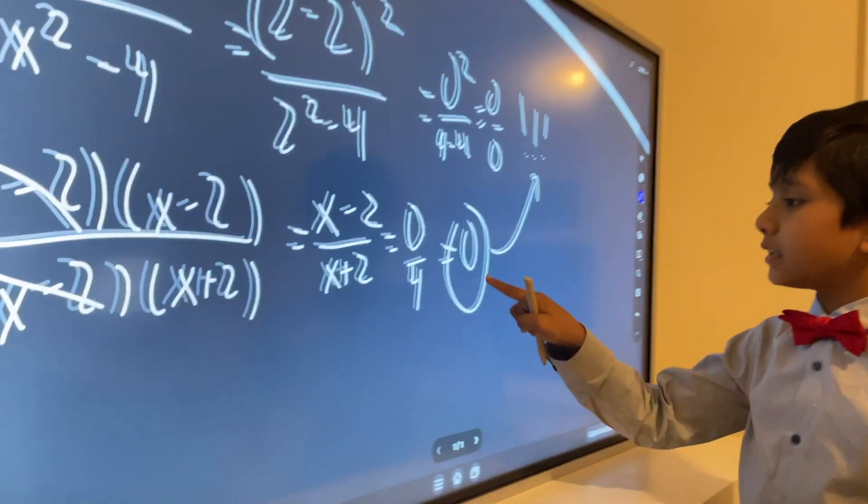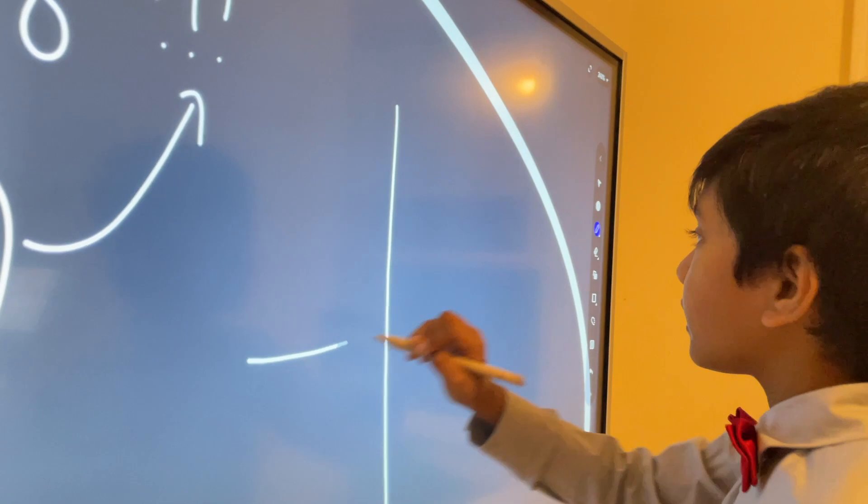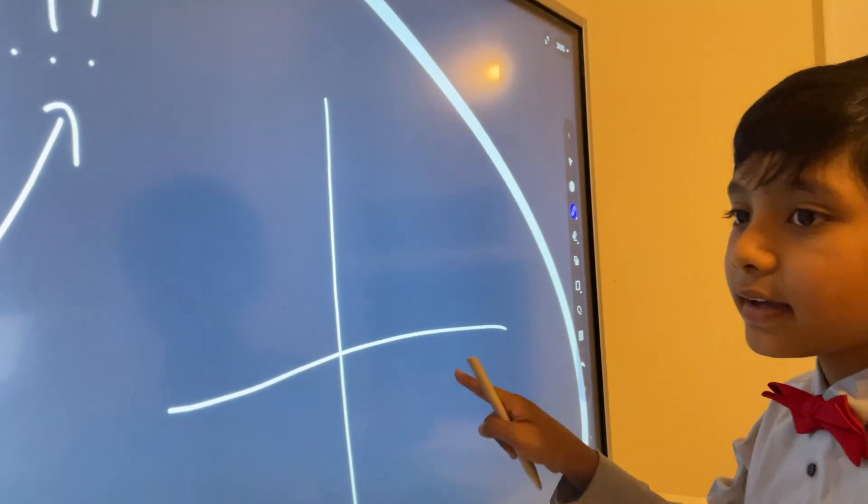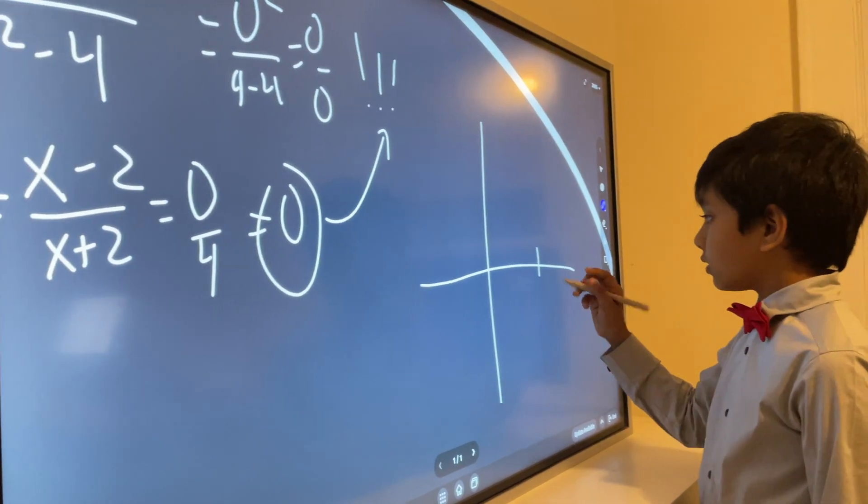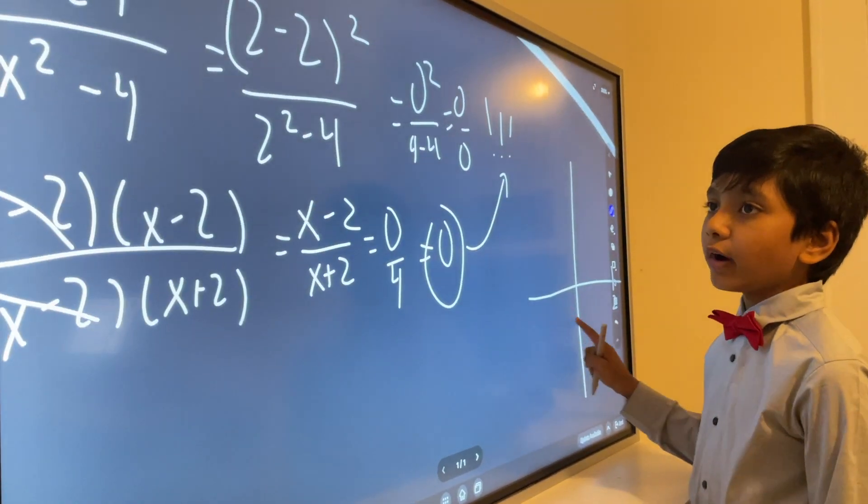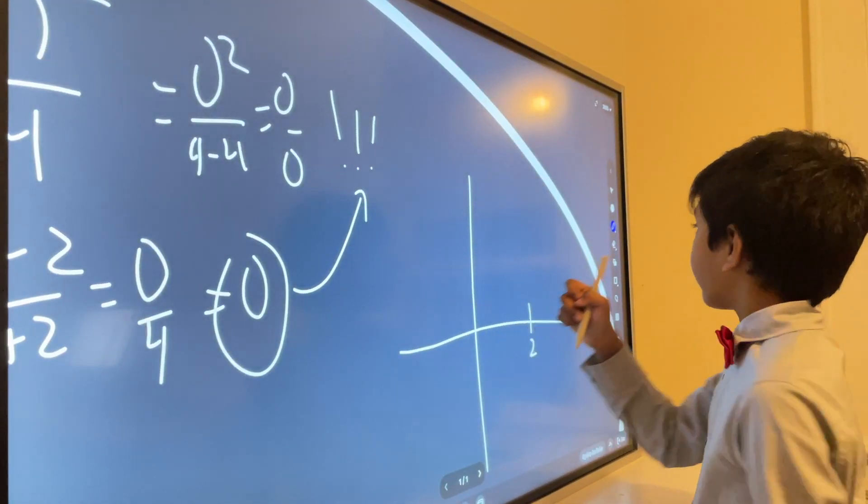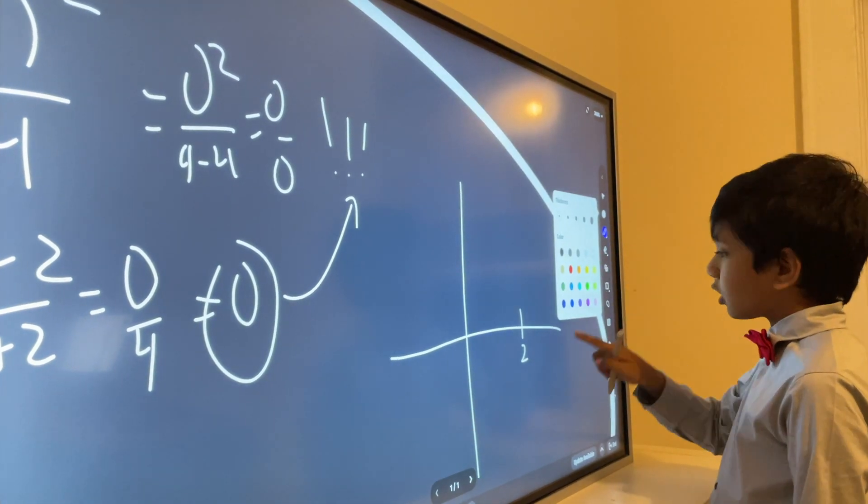So that means that the graph would look something like this. If we had negative 2 right over here. No, if we had positive 2 right over there, right? Then the graph would look just like this.